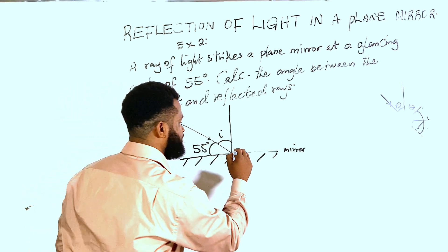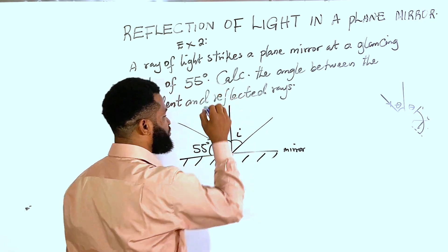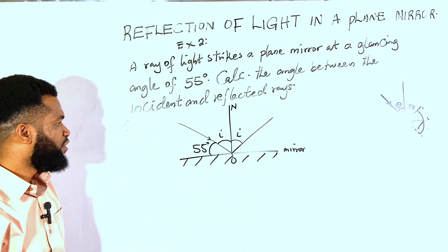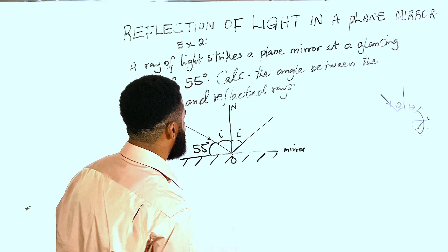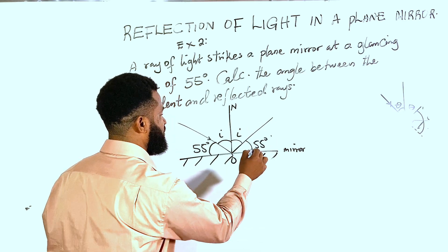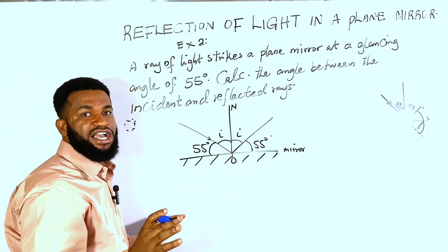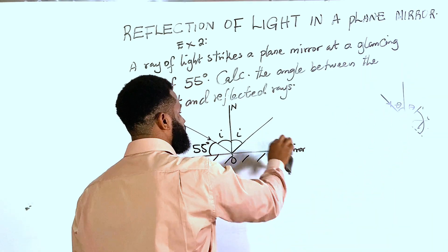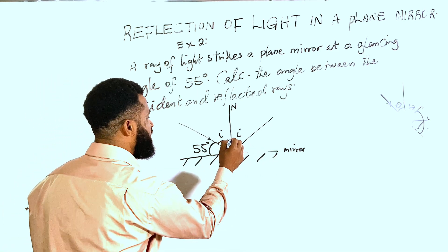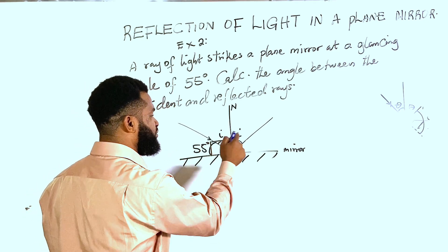The reflected ray must be on the other side. This angle and this angle must be the same — this is the origin of the mirror, and this line is the normal. The glancing angle is 55 degrees here, and from the normal to the mirror surface is 90 degrees, so I need to find the incident angle I.